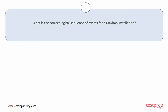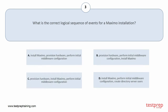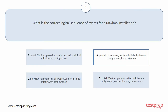Question number 3. What is the correct logical sequence of events for a Maximo installation? Option A: Install Maximo, provision hardware, perform initial middleware configuration. Option B: Provision hardware, perform initial middleware configuration, install Maximo. Option C: Provision hardware, install Maximo, perform initial middleware configuration. Option D: Provision hardware, create directory server users. The correct answer is option B.